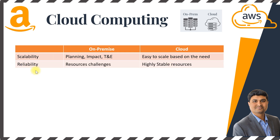The next aspect is reliability. When it comes to on-premise, it's very challenging to maintain all the resources such as AC power and any manpower required to make sure all the resources are maintained as per need. There is a high chance we may lose some reliability needs. Whereas in cloud infrastructure, it is highly stable because they make use of really high bandwidth networks, alternate sources of energy, firewalls and a highly secure environment, making it reliable.